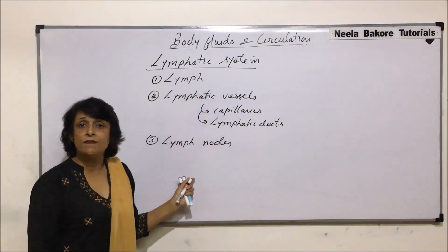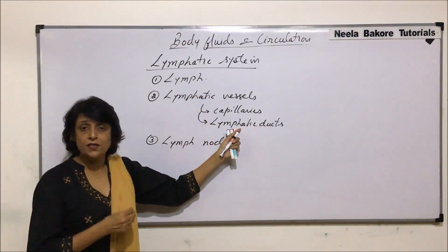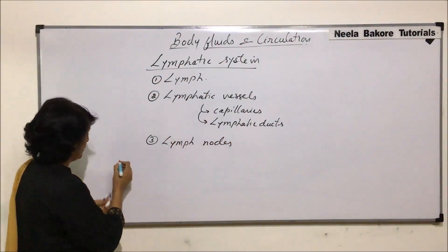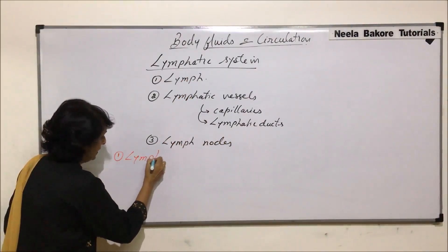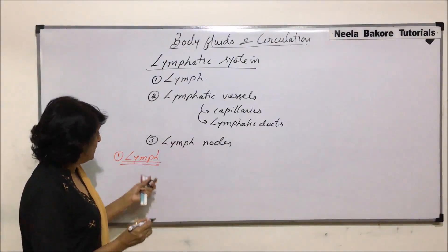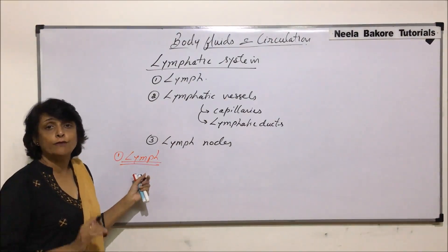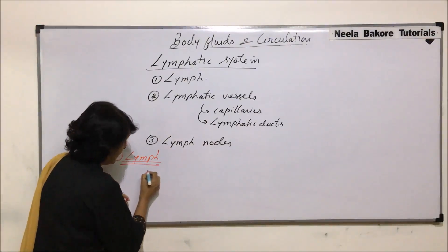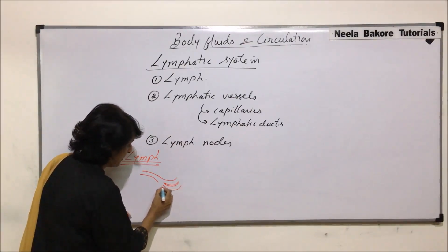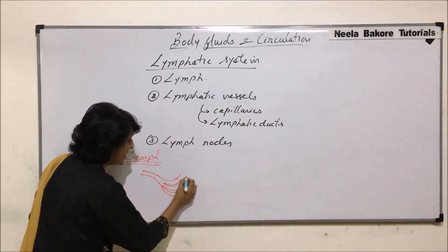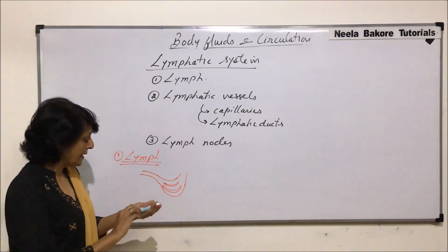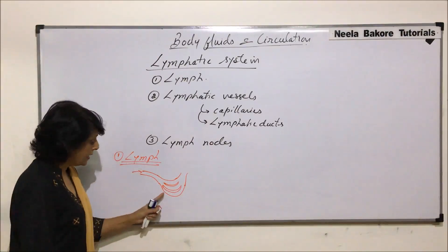Third are lymph nodes — these are glands or lymphoid tissues present in the path of the lymphatic system where the vessels or ducts are taking the lymph. Now let us talk about lymph first. What exactly is lymph and how is it formed? Lymph is formed by filtration of blood. The arteries divide into arterioles, and these arterioles break into a set of capillaries whose walls are extremely thin.